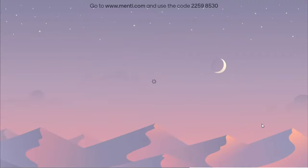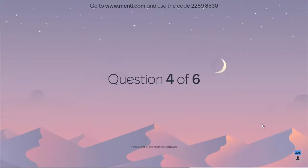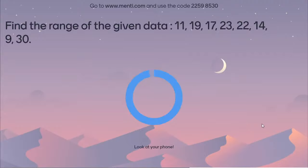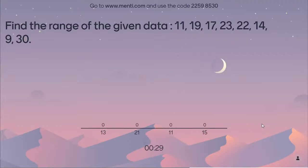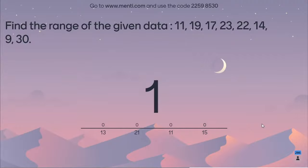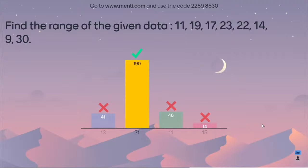Question number 4: Find the range of the given data — 11, 19, 17, 23, 22, 14, 9 and 30. The correct answer is 21. The highest observation is 30 and the lowest is 9. So 30 minus 9 is 21. The leaderboard shows Khushbu, Aditya, Ayush, Anuj, Suhani, Josh, Hiriyansh, Nirmali, and Veer.